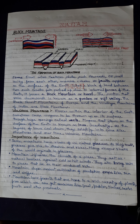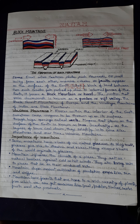In the given picture you can see how a block mountain is formed. Sometimes when tectonic plates push toward or pull away from each other, massive cracks or faults appear on the surface of the earth. When a block of land between two such cracks gets pushed up due to internal forces of the earth, it forms a block mountain or horst. The portion that sinks downward is known as a graben or rift valley.